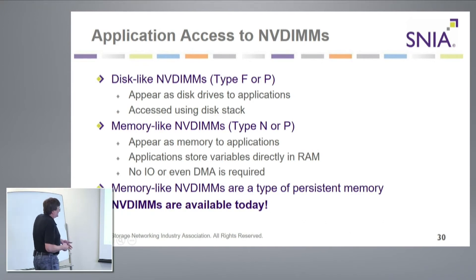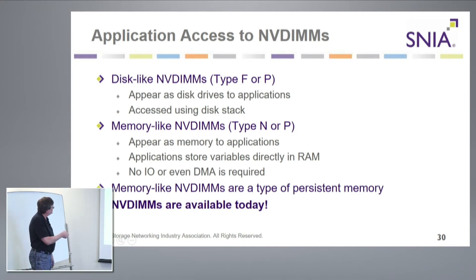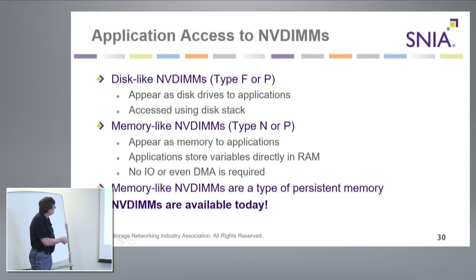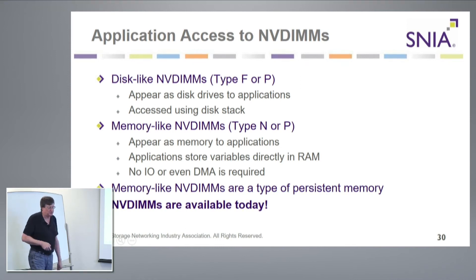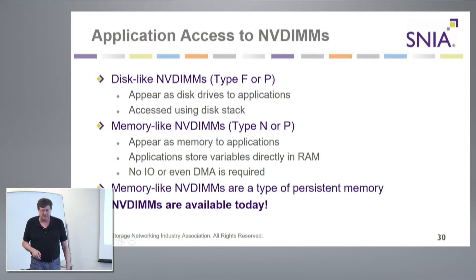Application access — very simple, two types. There's disk-like: F and P. There is memory-like: N and P. One appears as a disk, the other appears as memory. I don't do I/O to a memory-like semantic — I do CPU load/store. So memory-like NVDIMMs, in particular the dash-N, which is currently the most popular implementation, are a type of persistent memory and they're available today.